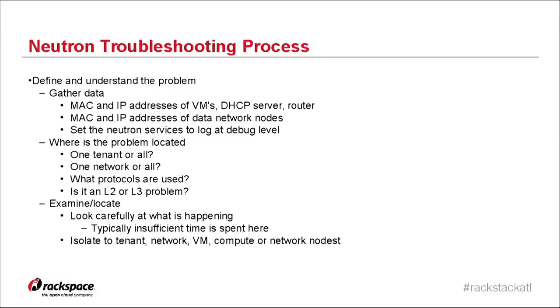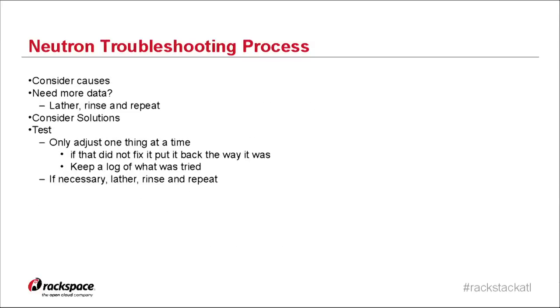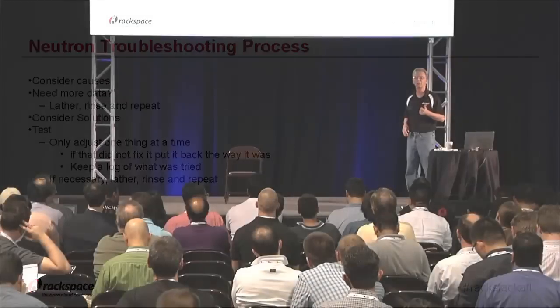Examine and locate — take time to carefully troubleshoot through. We need to isolate it to a tenant, a network, a VM, or a compute or network node. At that point, once we've collected data, consider the causes. We may find we need more data — go through the process again. What are the solutions? Test. Only at that time start adjusting things — one thing at a time, folks. Resist the temptation. I know when I succumb to it, it's the wrong thing. One thing at a time, go back, and keep a log of what you've tried — it makes your life easier.